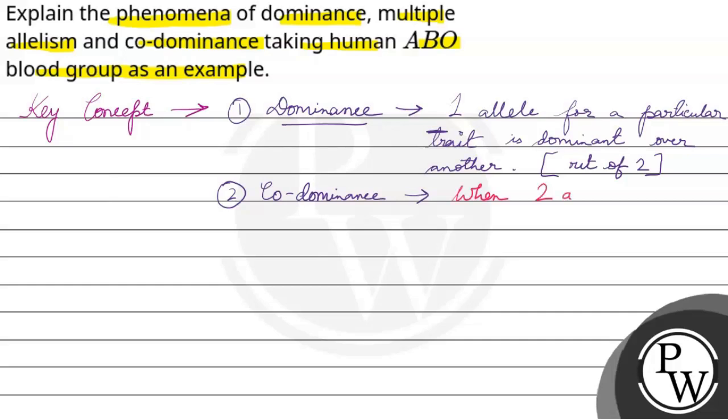Two alleles for a trait are equally dominant. Co-dominance.